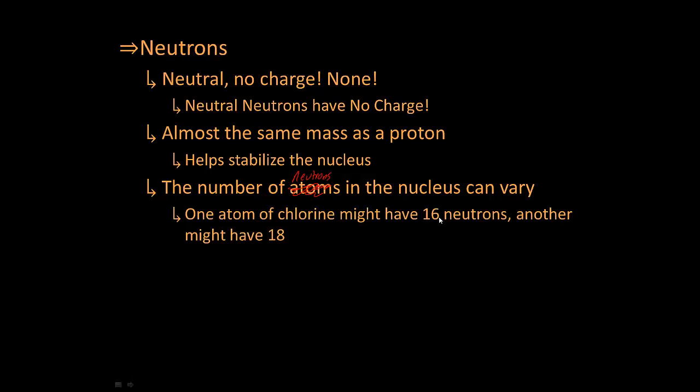So chlorine might have 16 neutrons, but another atom of chlorine might have 18 neutrons. As long as the proton stays the same, the element doesn't change. The neutrons can change. They really just help hold the nucleus together. They don't determine the element. They're neutral. They don't attract electrons. They don't attract protons. They're just stabilizing factors.